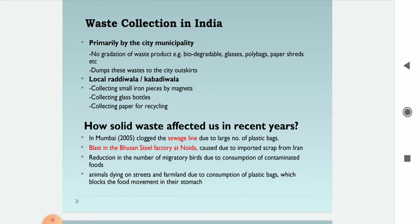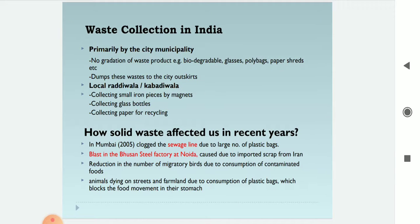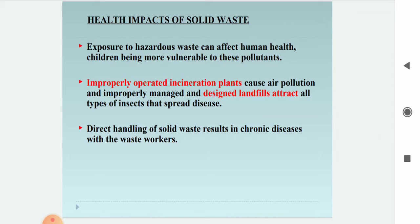How has solid waste affected us in recent years? In Mumbai in 2005, plastic bags clogged the sewage lines. A blast in the Bhushan steel factory at Noida was caused by imported scrap from Iran. Migratory bird numbers have reduced due to consumption of contaminated foods, and animals are dying on streets due to consuming plastic bags that block food movement in their stomachs. Exposure to hazardous waste can affect human health, with children being more vulnerable. Improperly managed landfills attract insects that spread diseases, and direct handling of solid waste results in chronic diseases among waste workers.